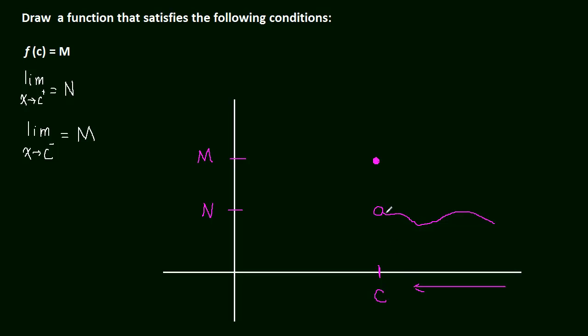We know we can't have a point here. How do we know that can't be filled in? Well, because then this function wouldn't pass the vertical line test. We'd have two points at c, so that has to be a hole there.